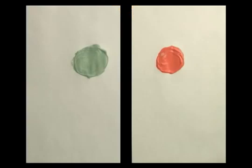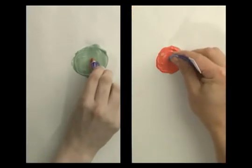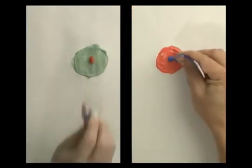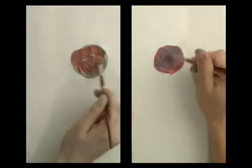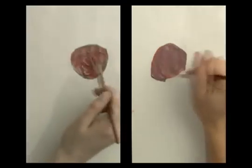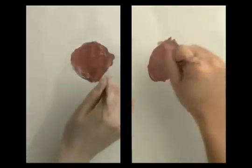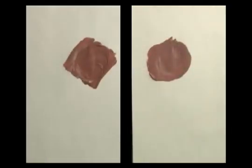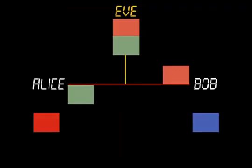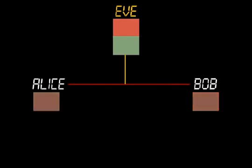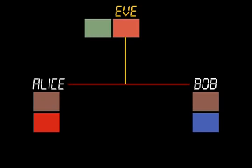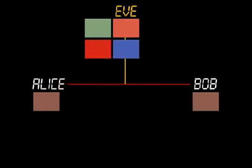Now the heart of the trick. Alice and Bob add their private colors to the other person's mixture and arrive at a shared secret color. Notice how Eve is unable to determine this color since she needs one of the private colors to do so. And that is the trick.